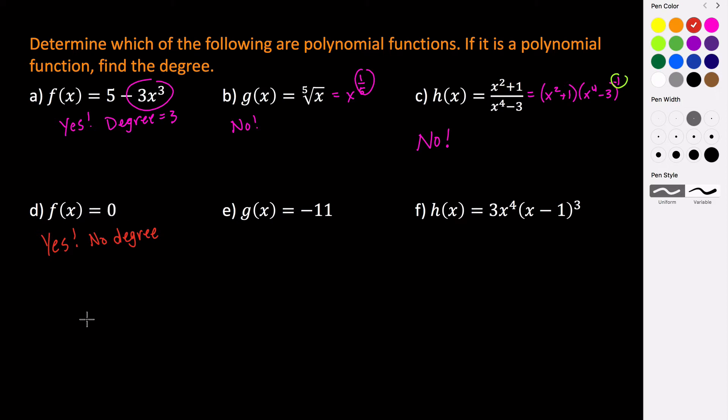If you think about zero, zero times anything is zero. So technically, we could read this as zero times x to maybe the fifth, and that would be zero. Or maybe it's zero times x to the fifteenth, or zero times x to the 1,500 and second.